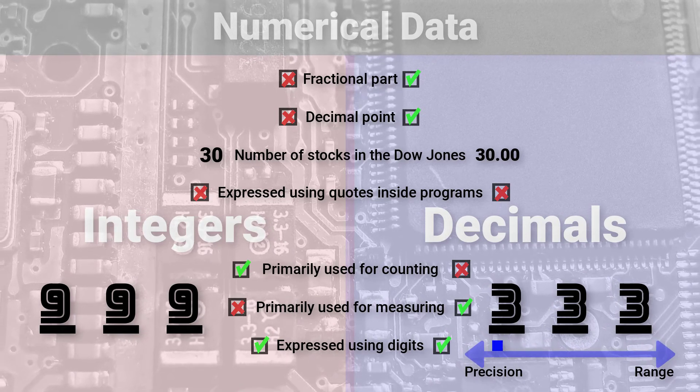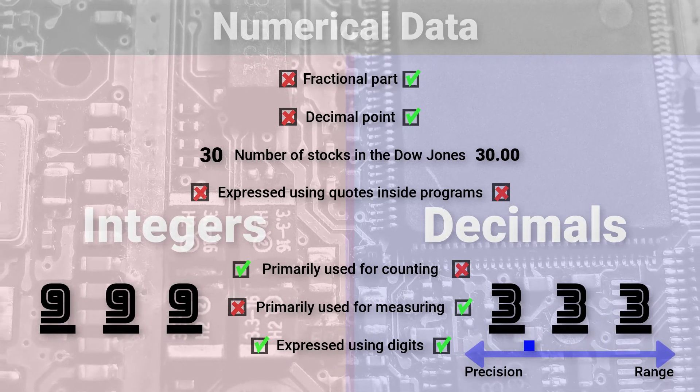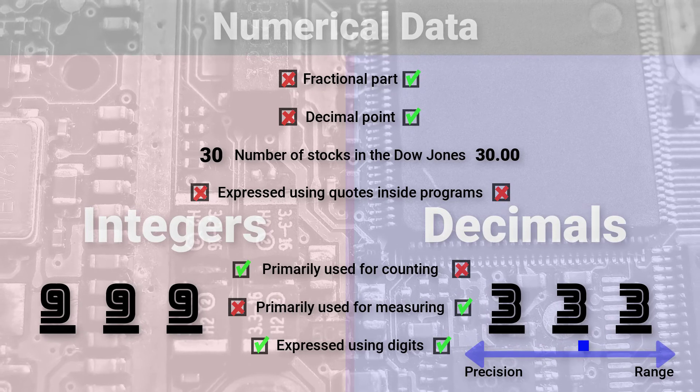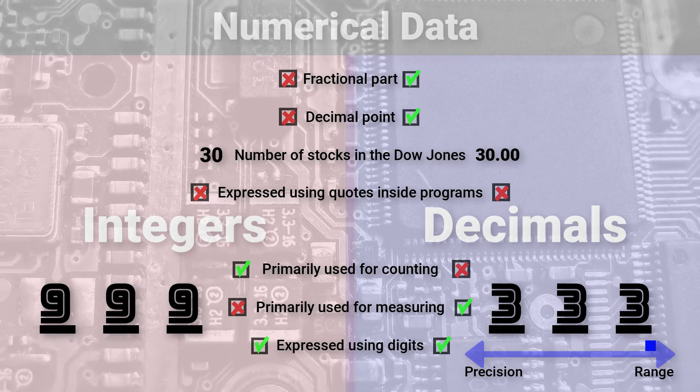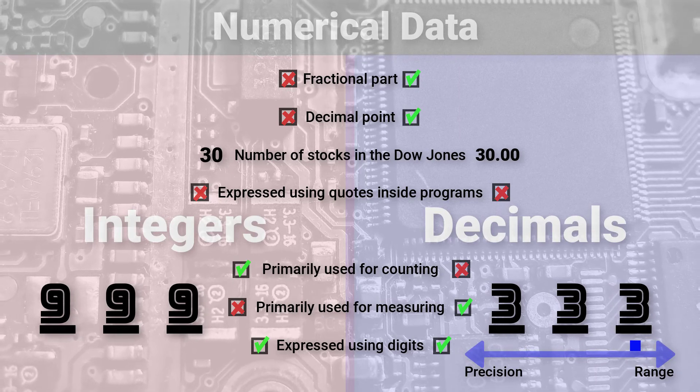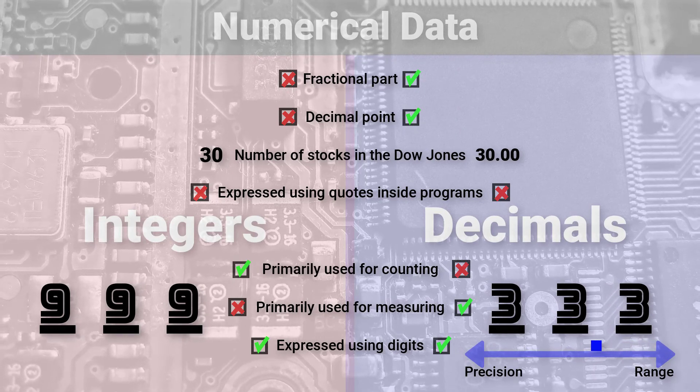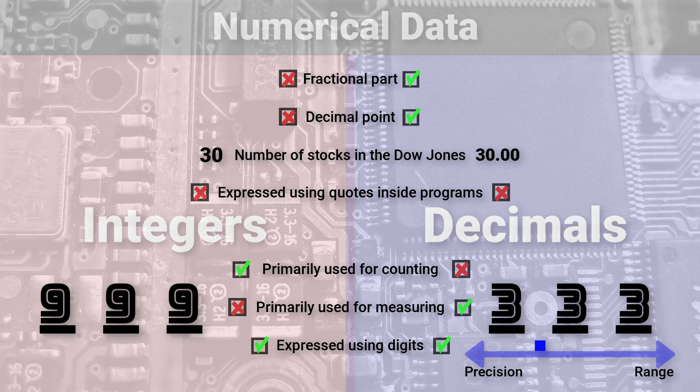The main message here when it comes to numbers is that there are two primary types, integers and decimals. We use integers for counting, and we use decimals for measuring. Inside computers, the range and precision that can be represented is limited, but this is no different from what we are used to in real life.